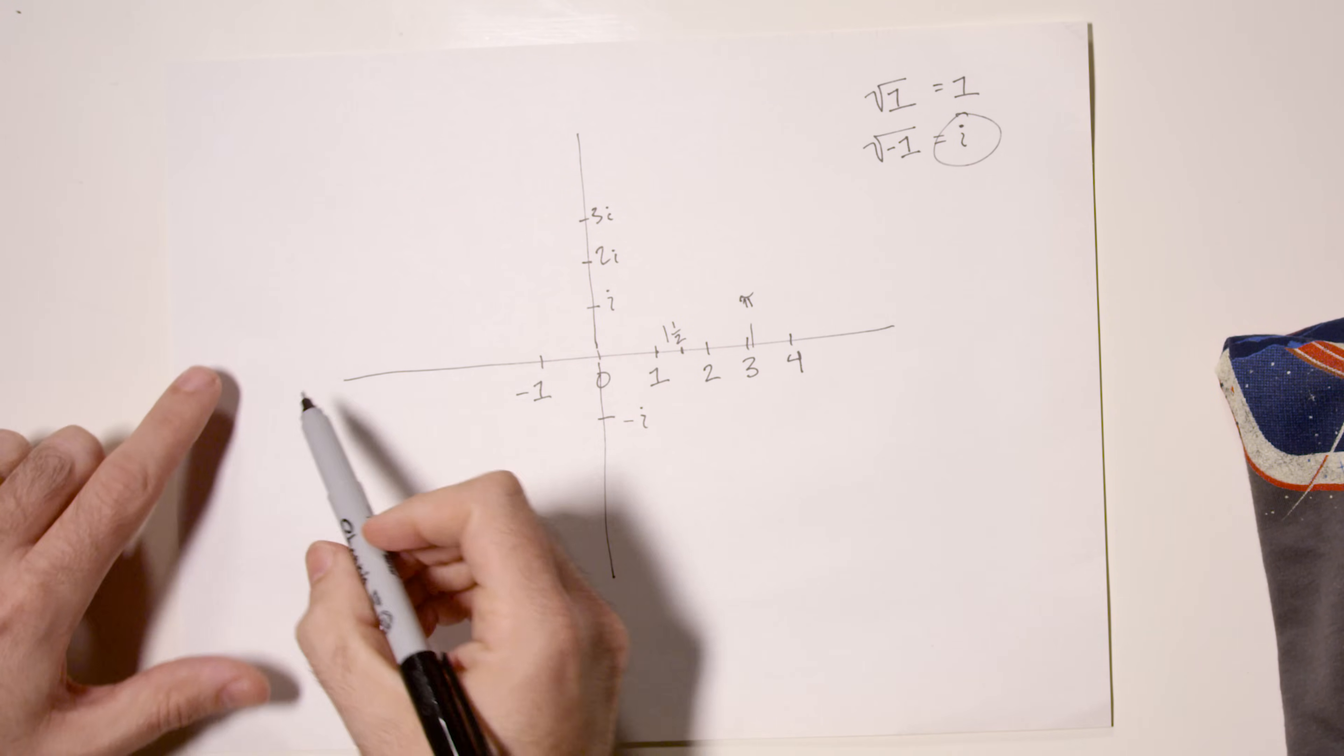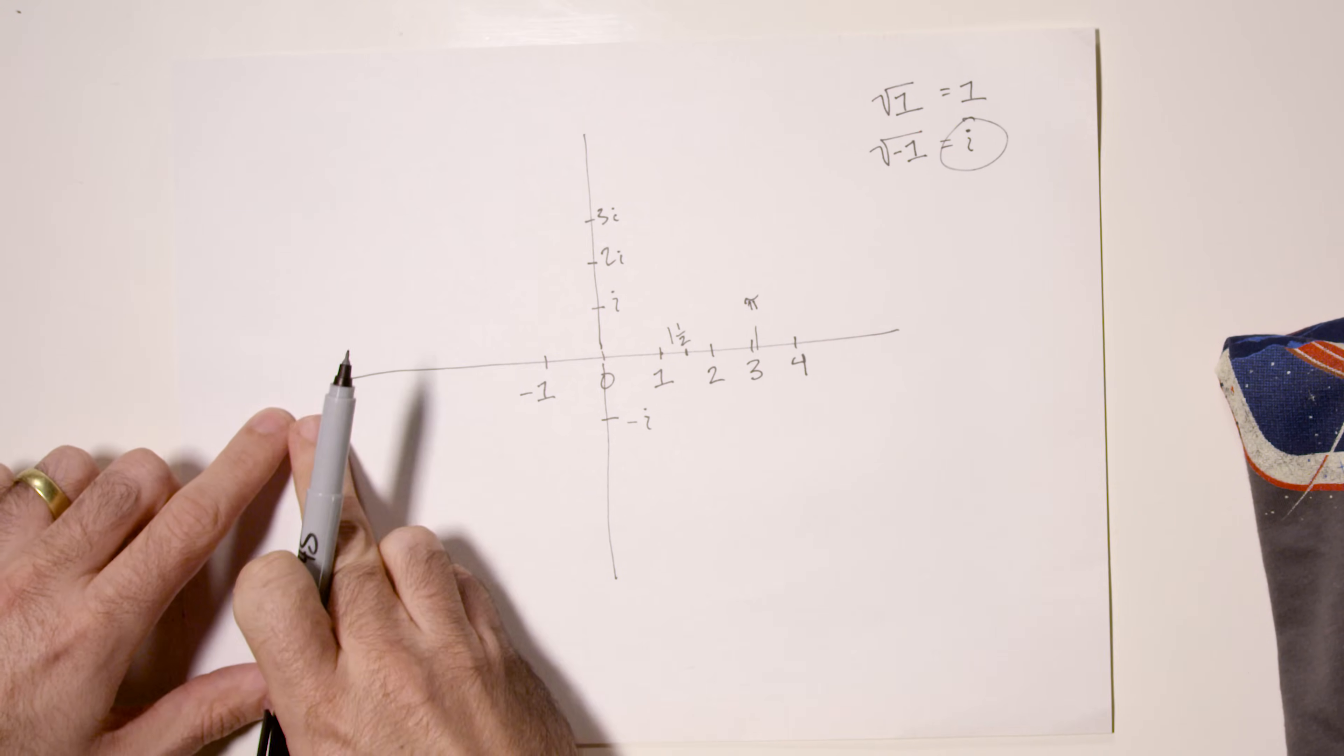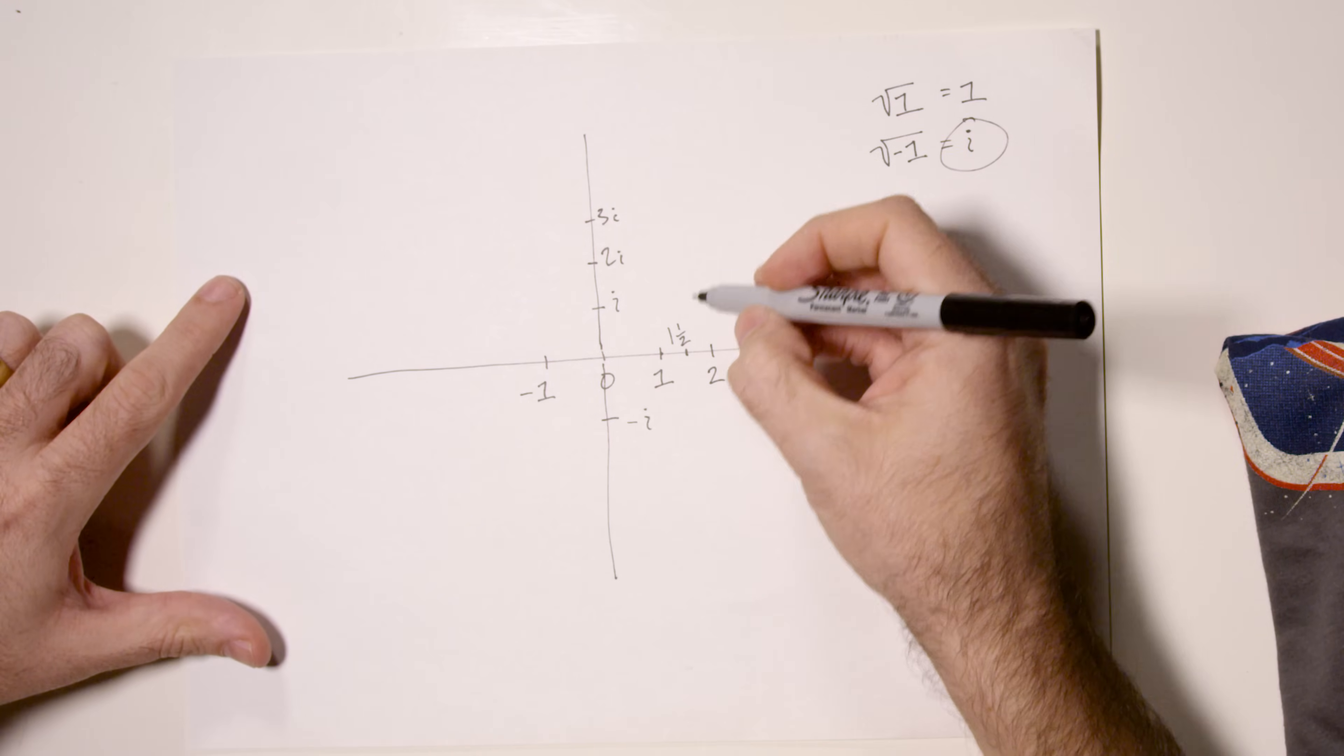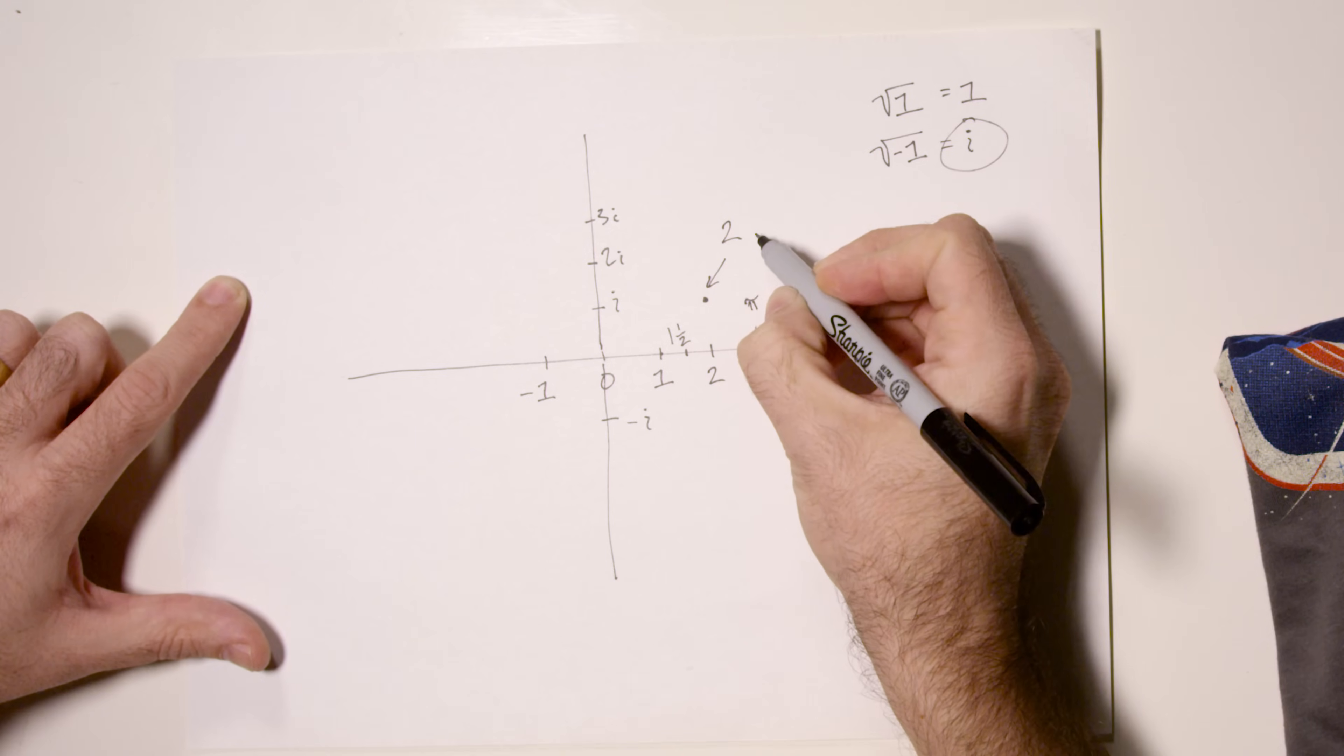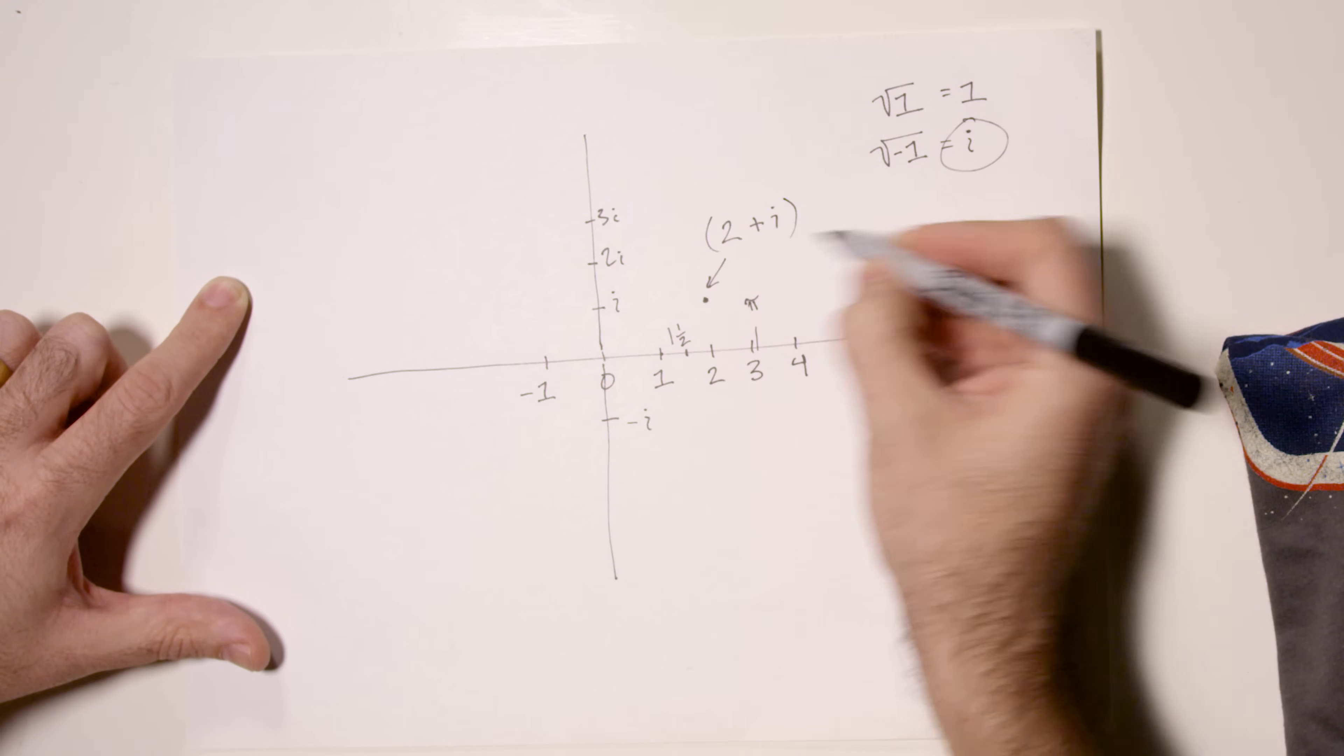What we now have is not just a real number line, but a complex number plane. A complex number is a combination of a real number and a complex component that involves i. Actually, every real number is a complex number. Here's an example of a complex number just to get us started. If I pick any point on this plane, it will be a complex number. This one right here, this is 2, the real number 2, plus i. It's 1 up from 0. This is 2 plus i.